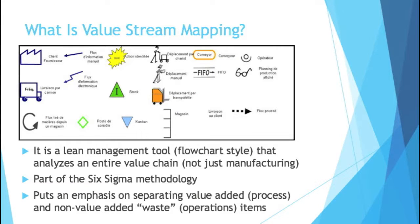What is value stream mapping? Value stream mapping is a lean management tool. It's similar to a flowchart that analyzes an entire value chain. So it's not just focused on the manufacturing process — it focuses on things like shipping, both receiving from the supplier and shipping to the customer.